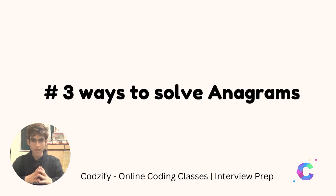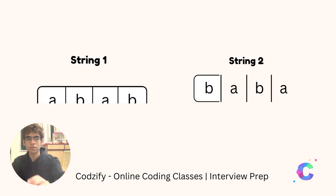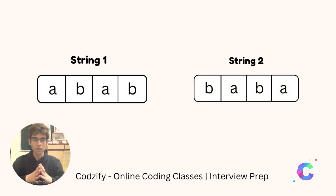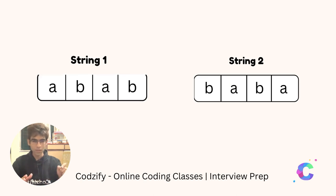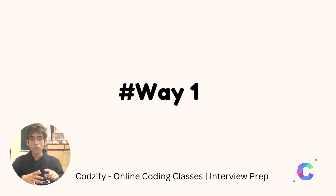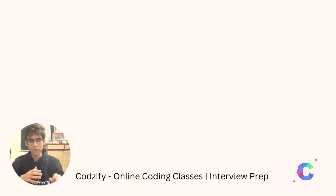Three ways to solve the anagrams. Suppose you have two strings ABAB and BABA. Now the first way through which we can solve the anagram is this.